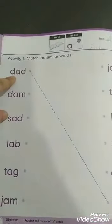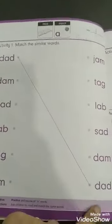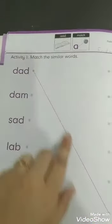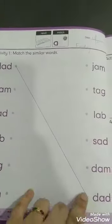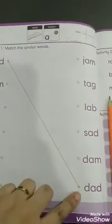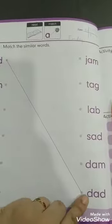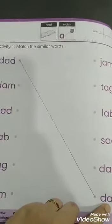First column pe diye gaye words ko hum second column ke diye gaye similar words se match kareenge. Jaise dad. Dad ko humne dot ke saath match kiya hai as an example. Hum iske dots ke upar margin ke saath line draw kareenge and dad ke saath match kareenge.